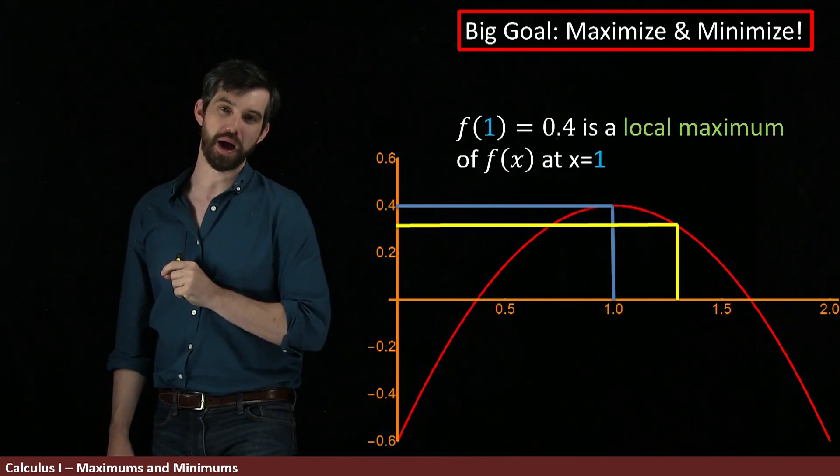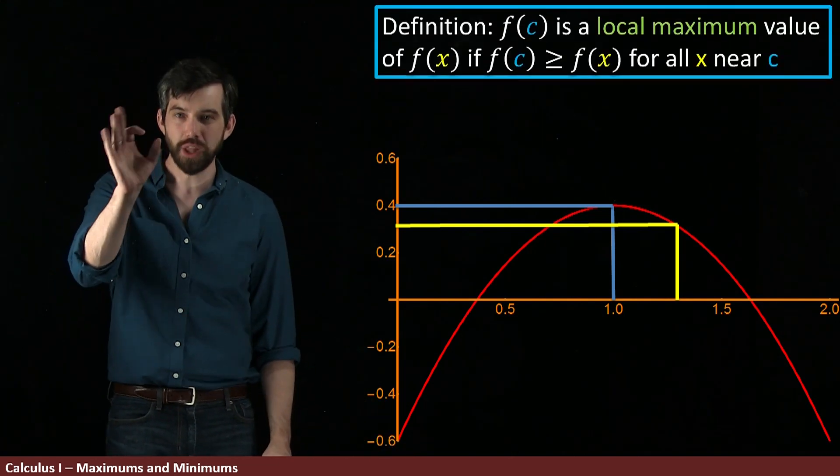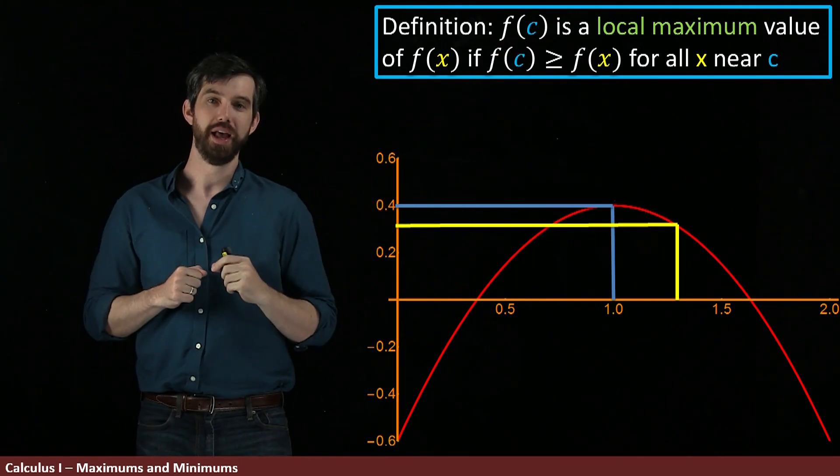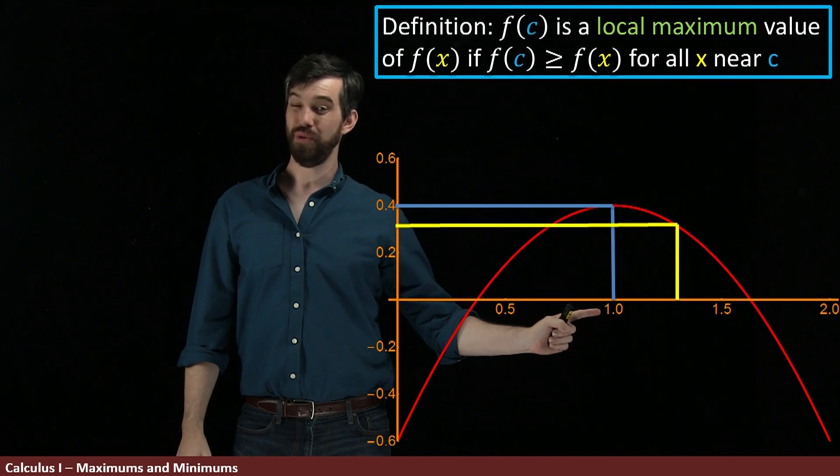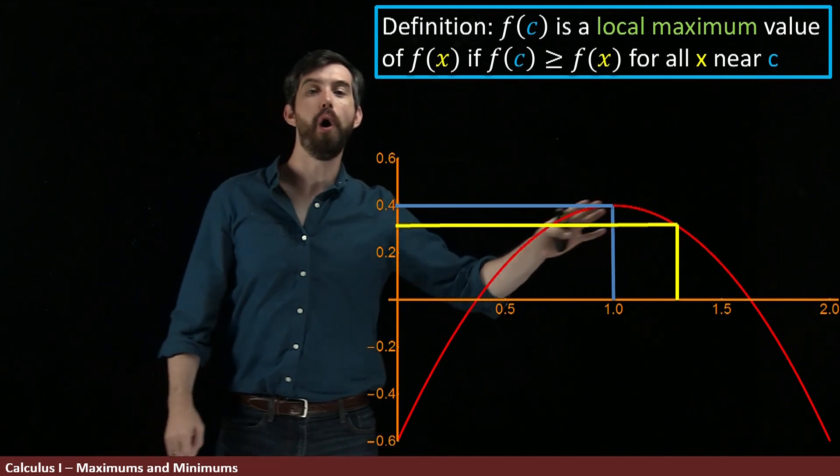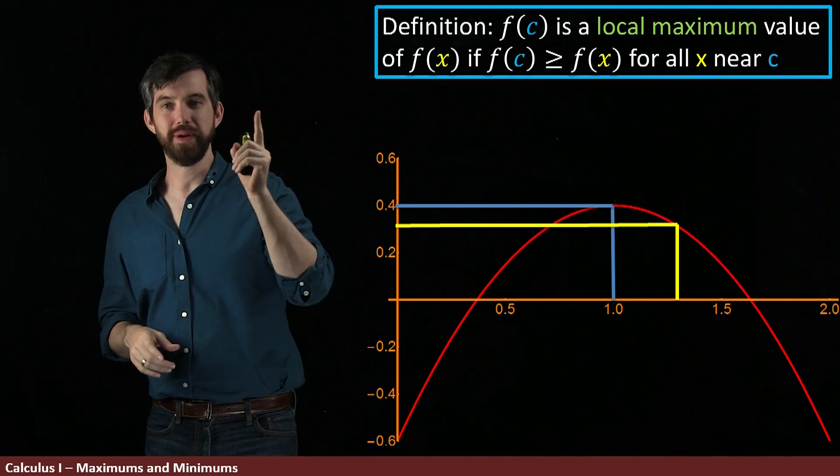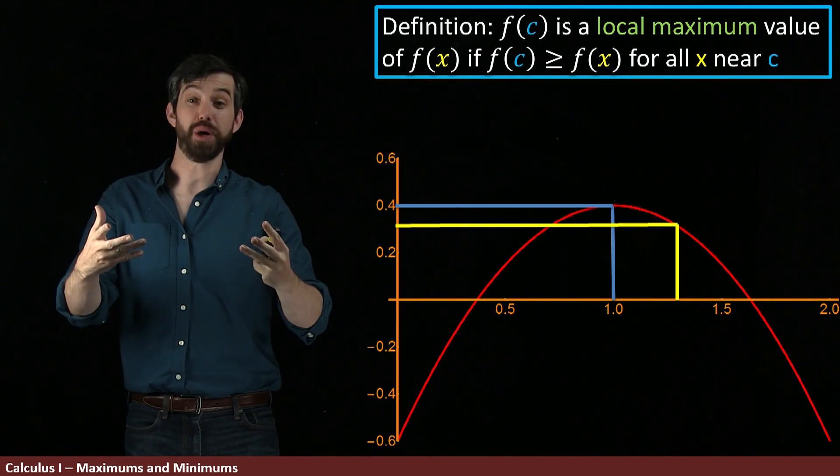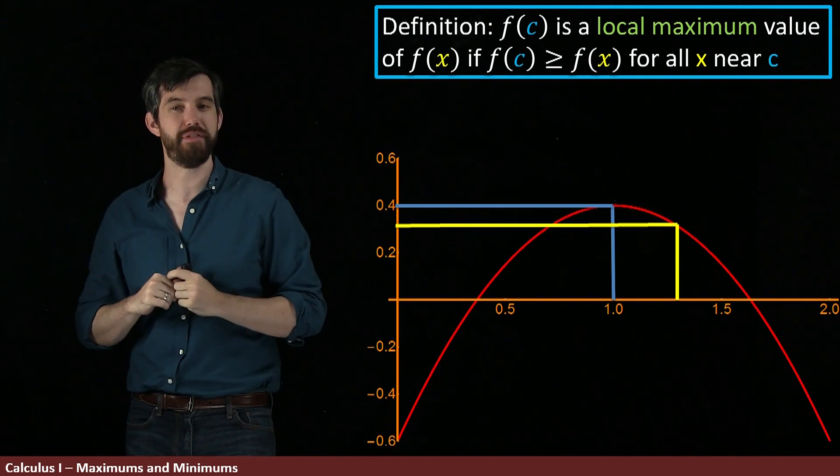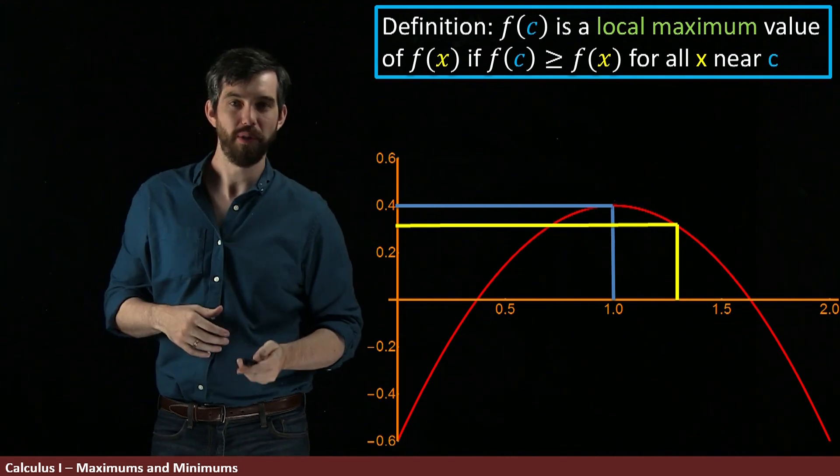So I'm going to codify this more precisely to say that our definition of a local maximum is the value f of c is a local maximum value if that particular value—in this case it's c equal to 1—has that the function is bigger than all of the other values nearby. In other words, you're finding a value of c which is an input such that the output f of c is bigger than all of the other outputs f of x for x values around that c.